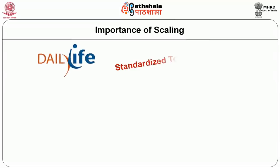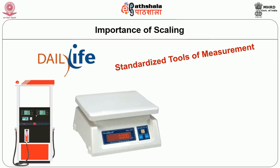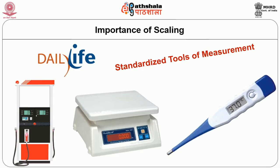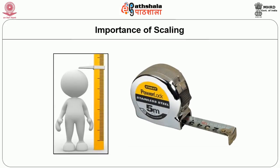In our daily life, we rely on different types of standardized tools of measurement. For example, a petrol dispensing machine in a petrol bunk measures the volume of petrol we ask for. A shopkeeper uses a weighing machine to measure the required quantity. In the case of measuring temperature, a thermometer is used, which is believed to be a standardized instrument. Similarly, height, distance, and a whole lot of other things in our daily life are measured using standardized instruments.